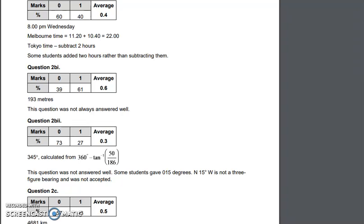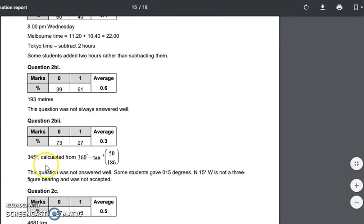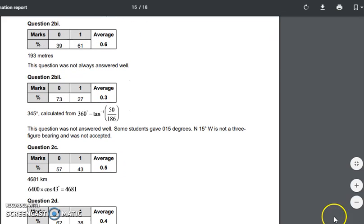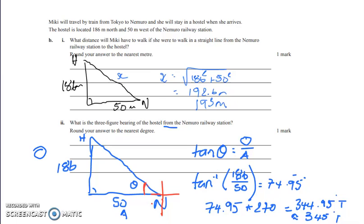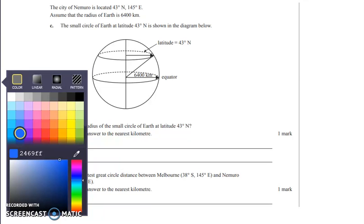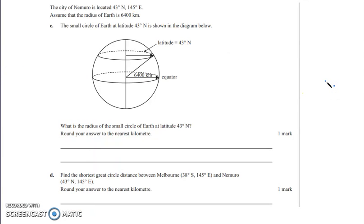Looking at the assessor's comments for this one, 345 degrees true, only 27% of the cohort managed to get that one correct. Knowing about the keyword of 'from' is what you need to do. In my class, we've spoken about the word 'from' many, many times. So knowing that we are calculating this angle and not this angle of depression up near here. Moving on to the last question.